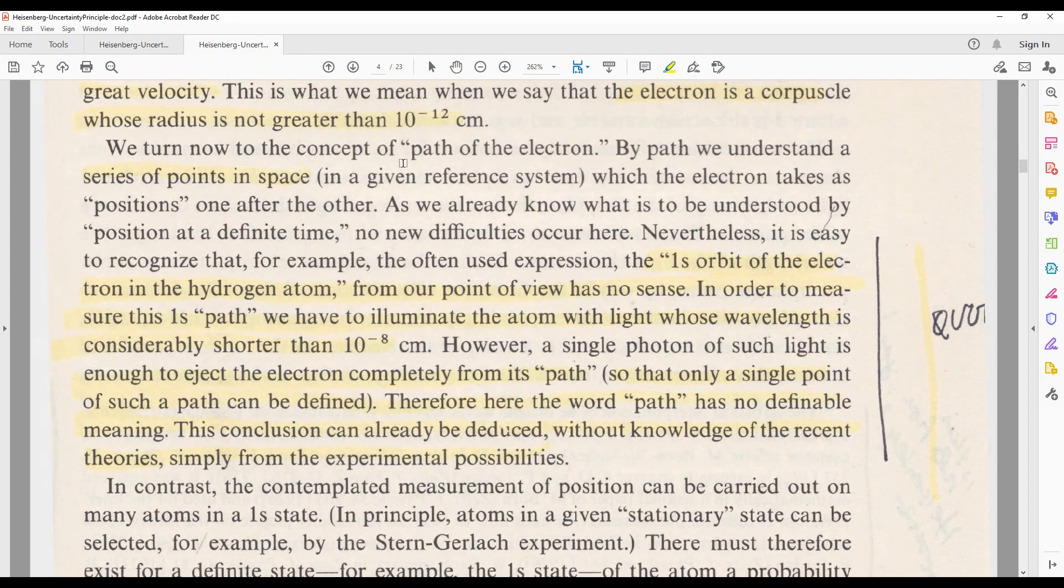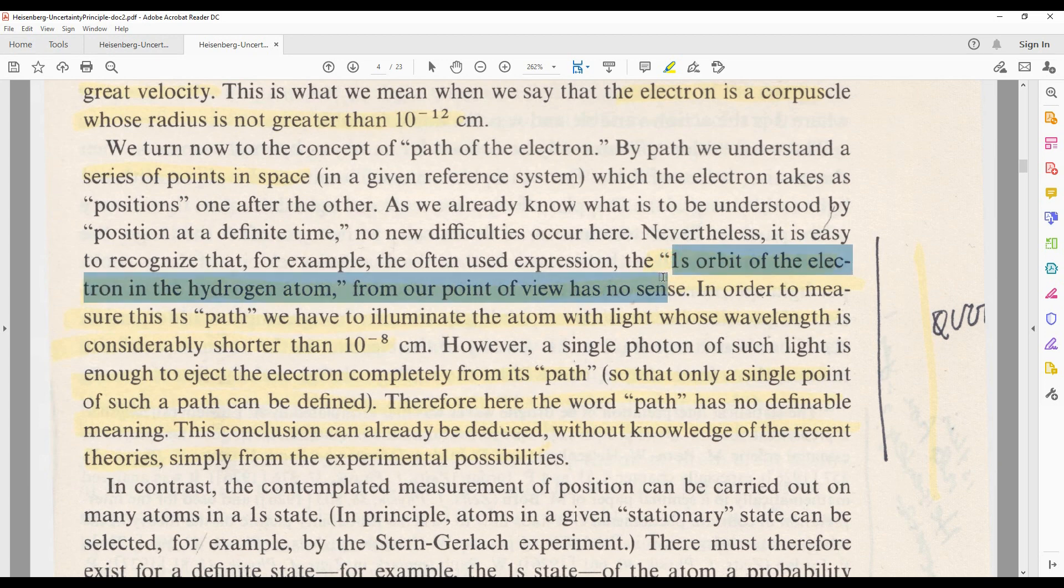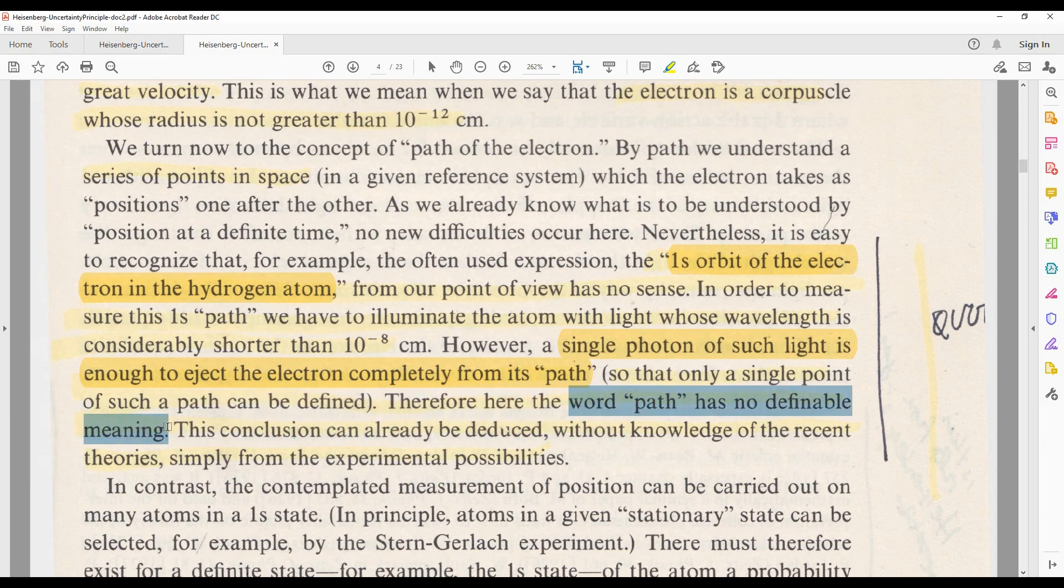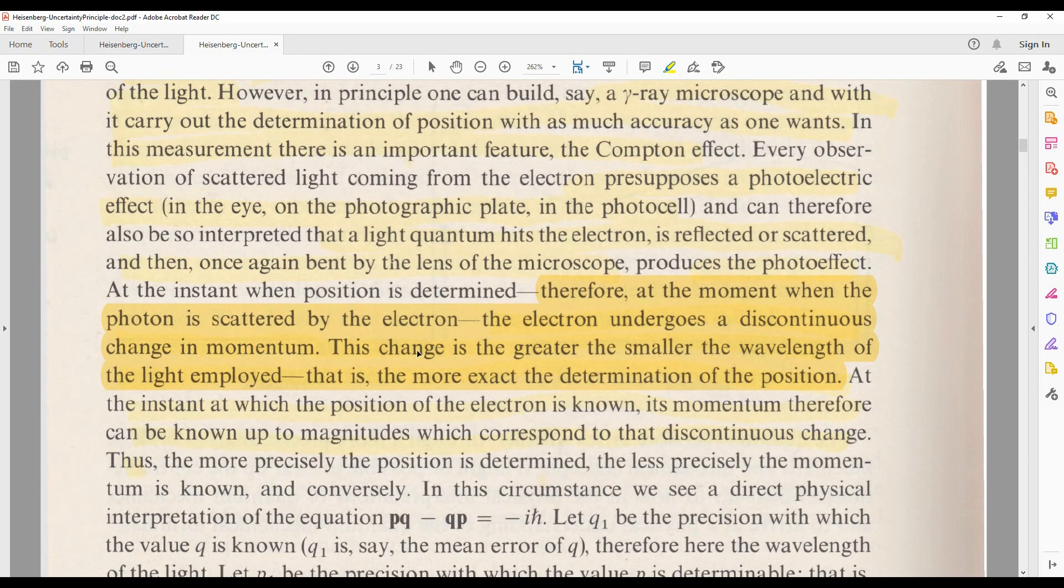So this is where he uses Einstein's idea of high energy photons, and his own idea of indeterminism. He is trying to figure out the orbit, or the path of an electron, in a hydrogen atom. You shoot a single gamma ray photon at the electron, and that ejects it completely out of the hydrogen atom. So the path of an electron has absolutely no meaning, and it cannot be determined. So you can see here that Heisenberg's uncertainty is based on the idea of Einstein's high energy photon flaw.